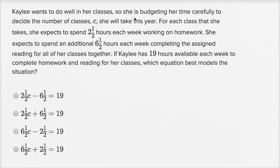Kaylee wants to do well in her classes, so she is budgeting her time carefully to decide the number of classes C she will take this year. For each class that she takes, she expects to spend 2½ hours each week working on homework. She expects to spend an additional 6½ hours each week completing the assigned reading for all of her classes together. If Kaylee has 19 hours available each week to complete homework and reading for her classes, which equation best models the situation?